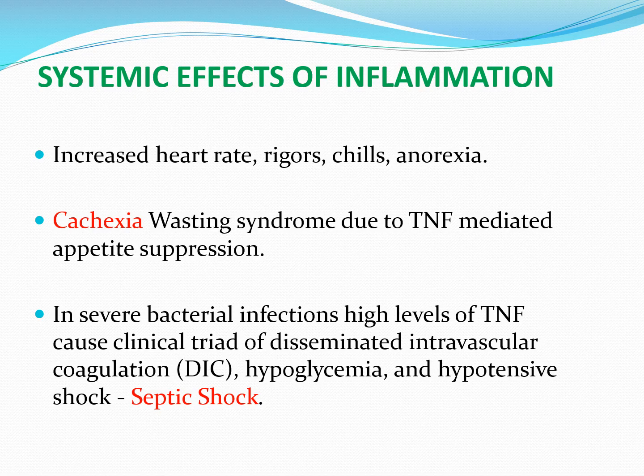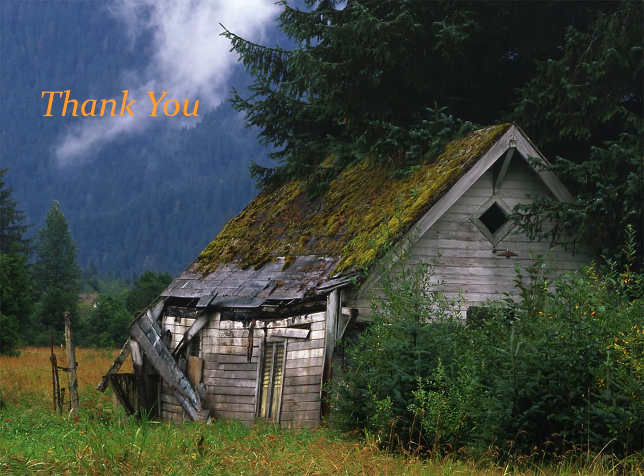Fever is associated with anorexia, fatigue, myalgias, increased heart rate, chills, and cachexia — the wasting syndrome. In cachexia, the person becomes weaker, muscles waste away, and significant weight loss occurs due to excessive TNF production in chronic inflammation and cancers. TNF reduces appetite; when the person stops eating, the body breaks down lipids and proteins to produce glucose. In severe bacterial infections, very high TNF levels can lead to disseminated intravascular coagulation (DIC), hypoglycemia, and hypotension — features of septic shock, which can be fatal.